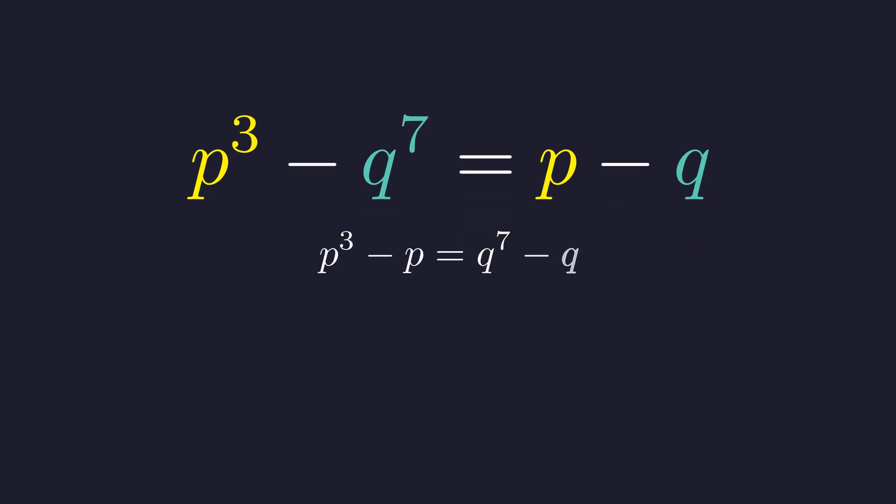This rearrangement yields p cubed minus p equals q to the 7th minus q. The equation now has a symmetrical structure, which is a key property to exploit.